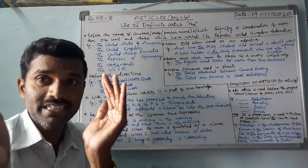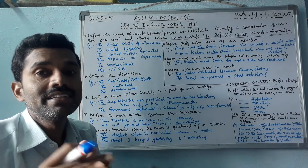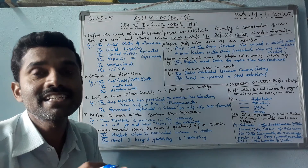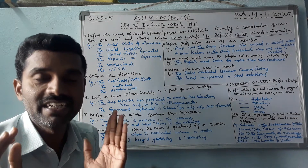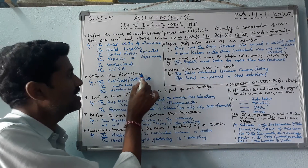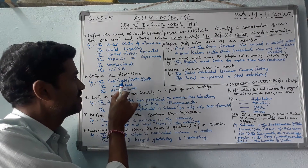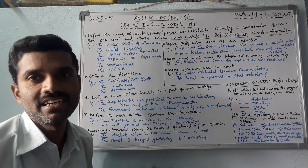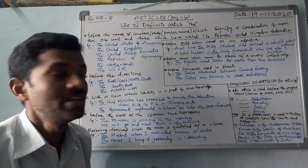Netherlands also formed a group of islands. So, for countries with more than one unit, we use the definite article 'the' before those names. Next, before directions — the east, west, north, south — the definite article 'the' is used before these directions.